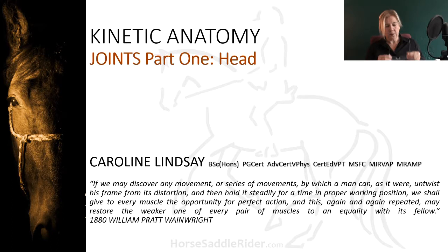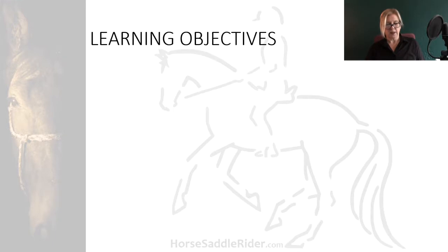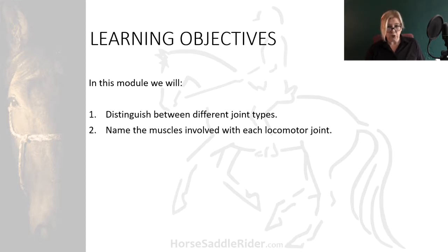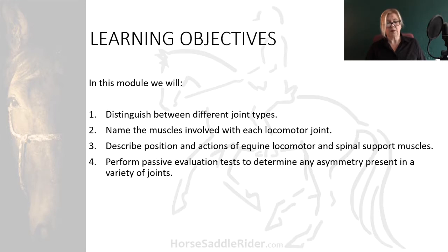In this presentation we will explore the muscle names, origins, insertions and actions most relevant to equitation. In this module we will distinguish between different joint types, name the muscles involved with each locomotor joint, describe position and actions of equine locomotor and spinal support muscles, and perform passive evaluation tests to determine any asymmetry present in a variety of joints.